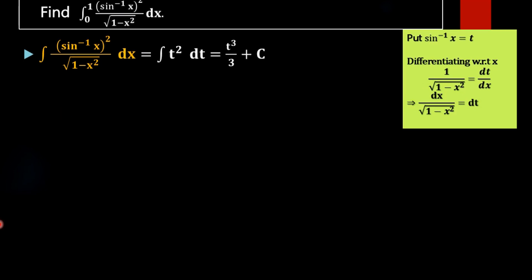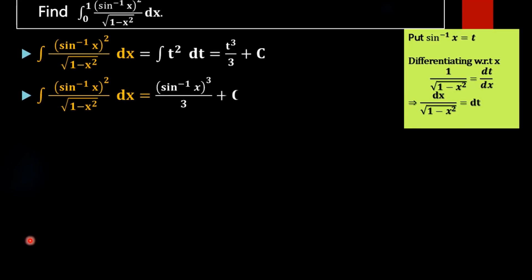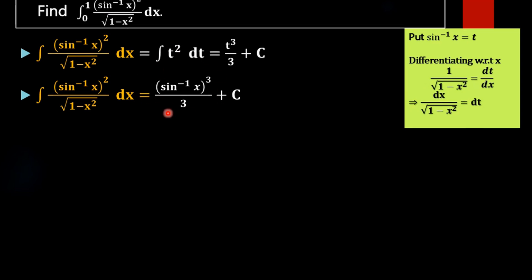In the next step we write the function back in terms of x. That is, the integral of sin inverse x whole squared divided by root of 1 minus x squared dx equals sin inverse of x whole cubed divided by 3 plus c. So this is our required result for the indefinite integral.